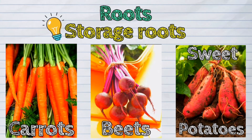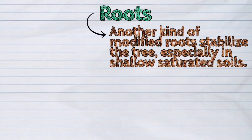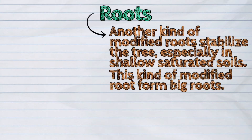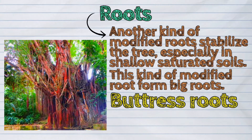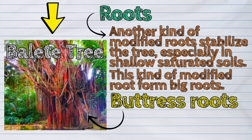Another kind of modified roots stabilize the tree, especially in shallow saturated soils. This kind of modified roots form big roots called buttress roots. An example of this is a balete tree.